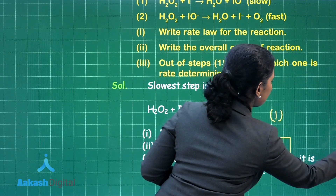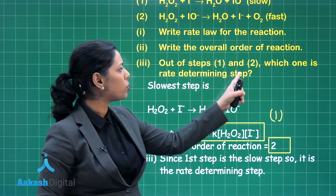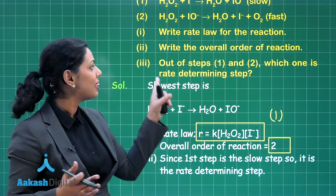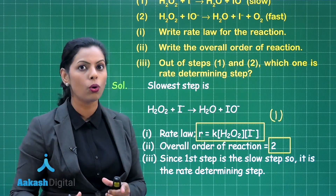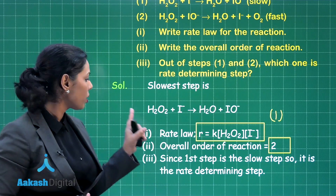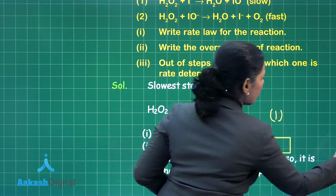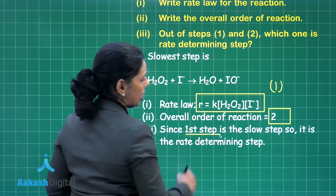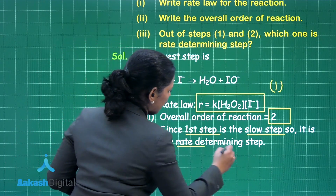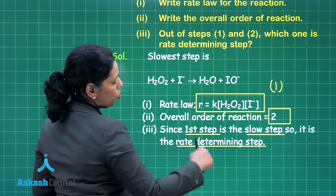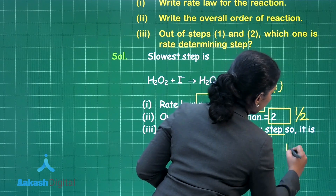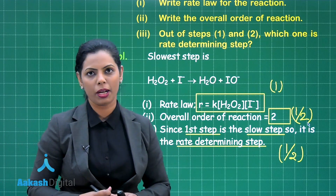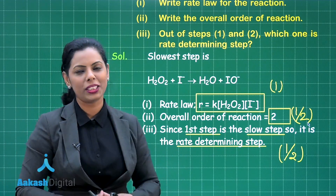Now for the third point: out of step 1 and step 2, which one is the rate-determining step? This you have already answered — the rate-determining step is always the slowest step of the reaction. Here you can clearly see that the first step is the slow step and it is the rate-determining step. For writing the order of the reaction you get half a mark, and for writing the rate-determining step you get half a mark. So overall two marks for this question.